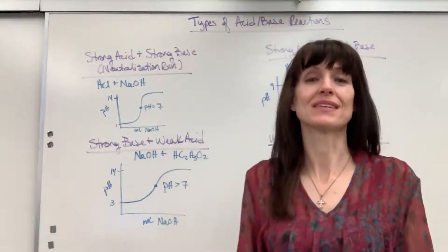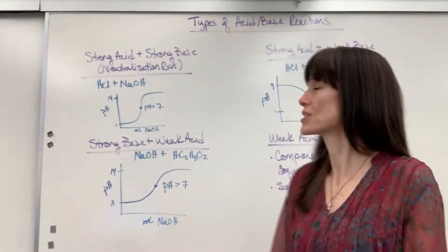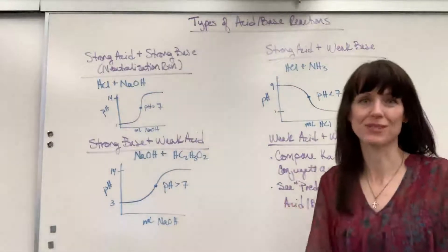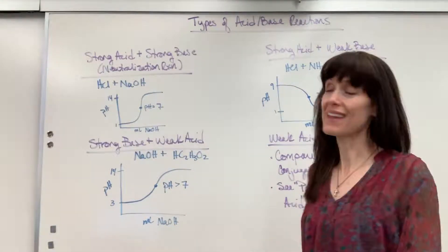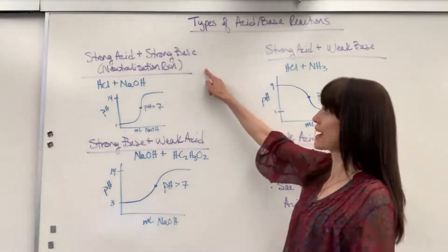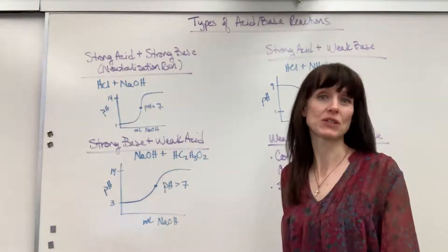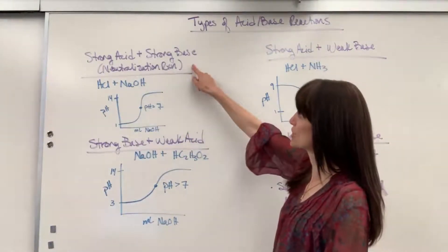Hi, we're going to go over the types of acid-base reactions. I've put a graph and some information for each of these. So let's begin, and we're going to start with the strong acid and a strong base. This has a special name. It's called a neutralization reaction.